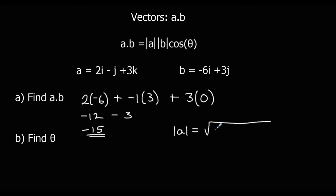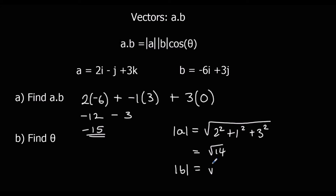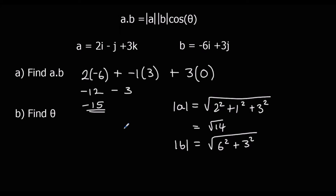Mod a is the square root of 2 squared plus 1 squared plus 3 squared. We don't have to worry about the negative, because negative 1 squared and 1 squared are the same thing. That gives us root 14. And mod b, the magnitude of b, is the square root of 6 squared plus 3 squared. So 36 plus 9 is 45, meaning mod b is root 45.